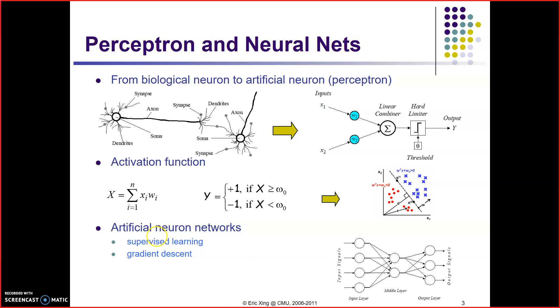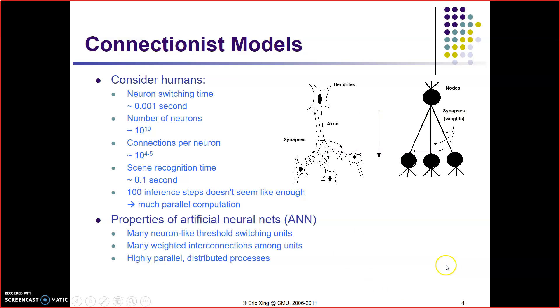This is the gradient descent. This is a typical example: input signal, input layer, middle layer, output layer, and output signals.